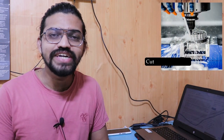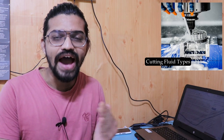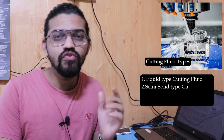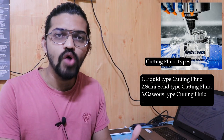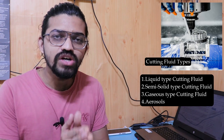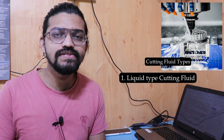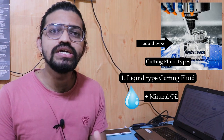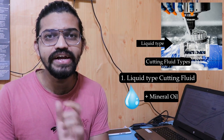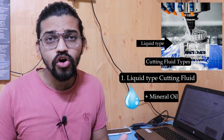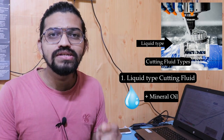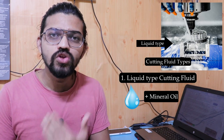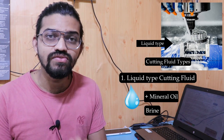Now let's talk about the different types of cutting fluids. Cutting fluids can be of the liquid type, semi-solid type, gaseous form, or in the form of aerosols. The first type is the liquid type. In most industries, this includes water or an emulsion of oil in water — particularly mineral oil added to water. The oil added can be mineral oil, vegetable oil, or oil produced from animal fats. In some scenarios, brine is also used as a cutting fluid.